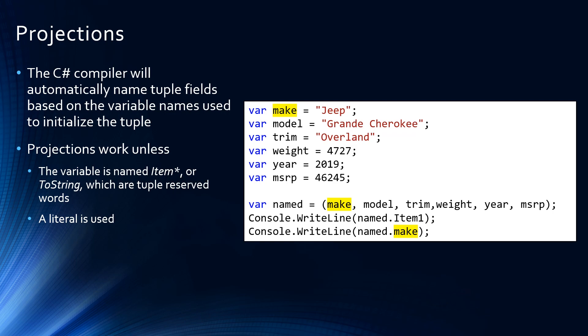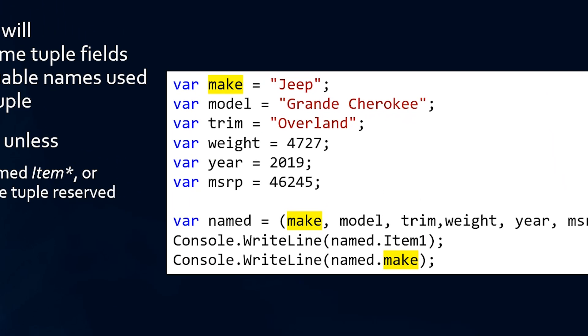Or if a literal is used, then the name of that field simply becomes item whatever the number is. And the items are always 1, 2, 3, 4, 5 starting at the beginning. Even if there are some field names that obscure the item number, they still maintain the sequence.